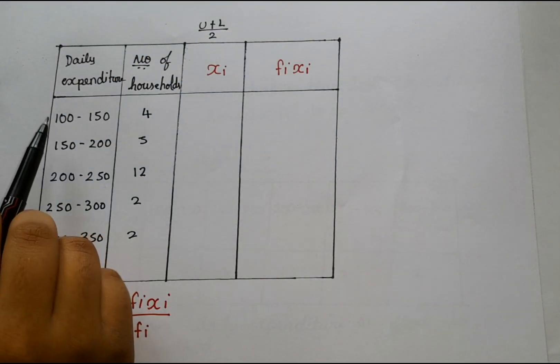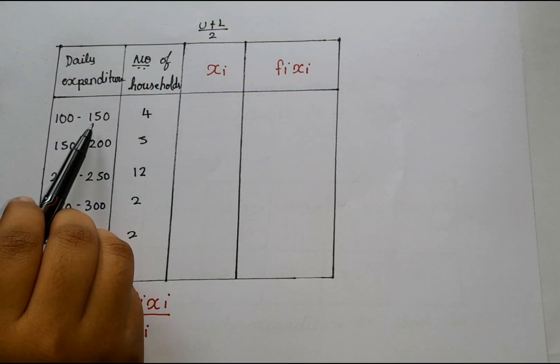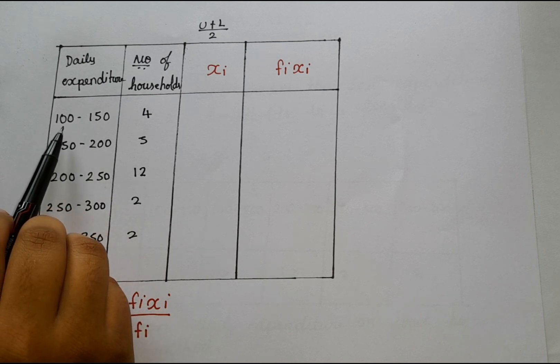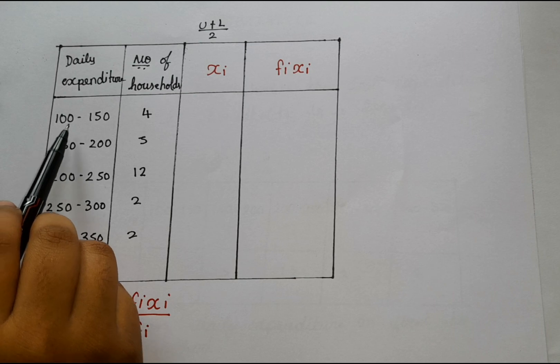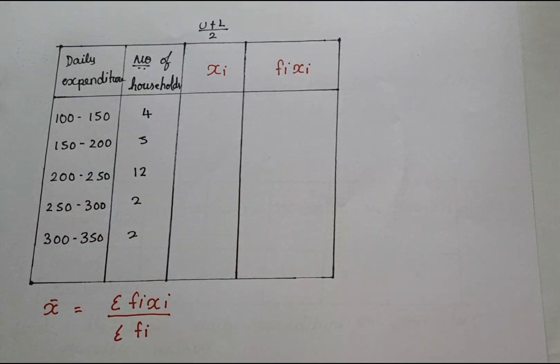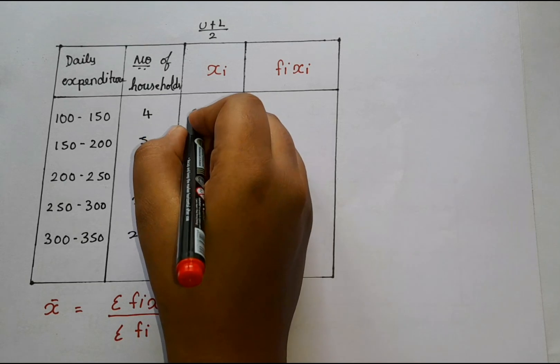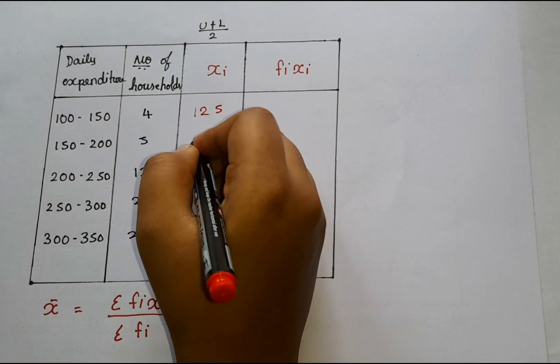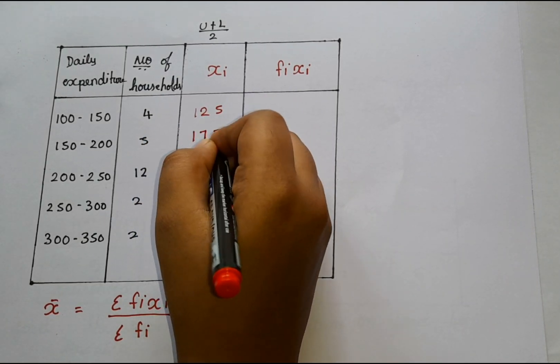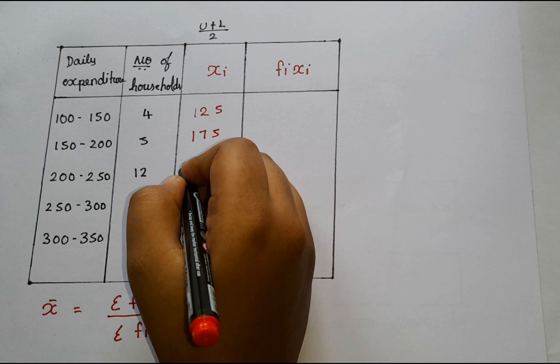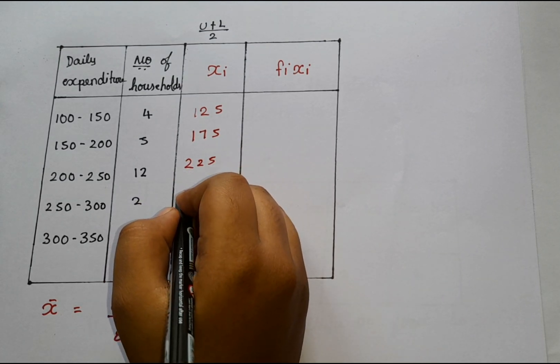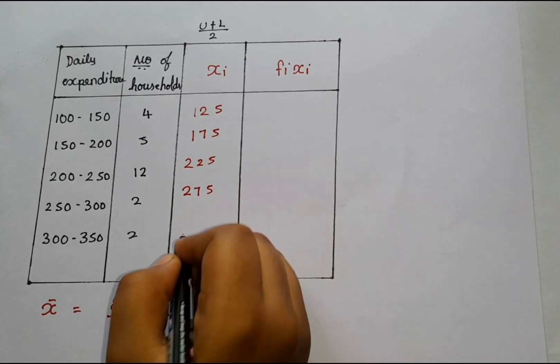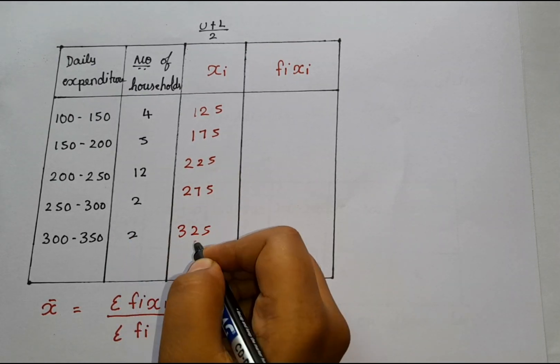Here what is the upper limit? Upper limit is 150 and lower limit is 100. So 150 plus 100 is 250. And then we are supposed to divide it by 2. So when we just do it, we will get 125. You can try. And then we will get 175 and we will get 225. And here it is 275 and here it is 325.